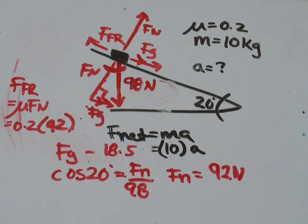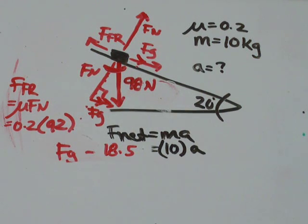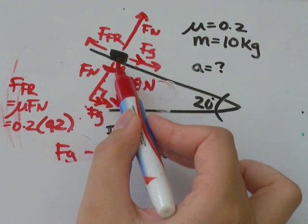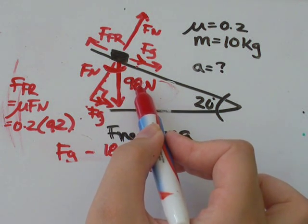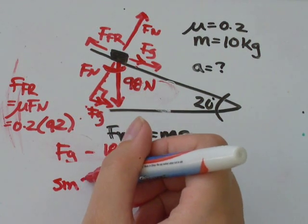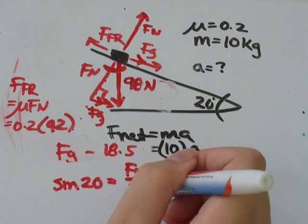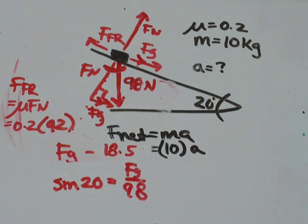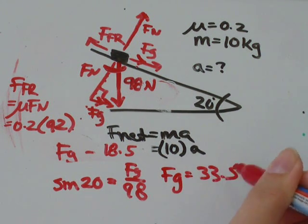And all I need to do now is figure out what Fg is, the component of gravity that's affecting my object. So Fg, with respect to this 20 degree angle, Fg is the opposite side. I'm going to use the hypotenuse, so I'm going to use sine. Sine of 20 degrees is opposite, which is Fg, over hypotenuse which is 98. So sine of 20 is equal to about 0.34 times 98. I get that's equal to 33.5.